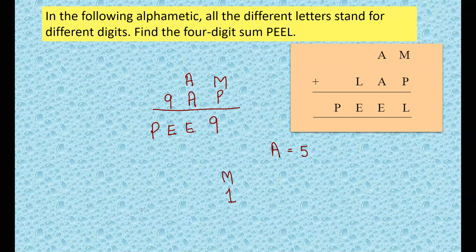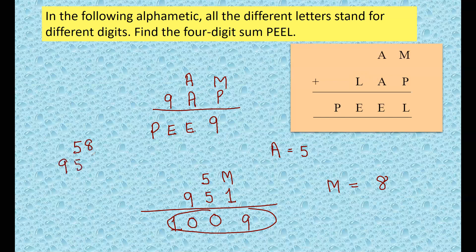And then 9 here, and this is 5 and 5, so this gives 0. Here it becomes 0, 1. So definitely now you can work it out. Then M will be 8, right? So our PEEL is 1009. You can see 58 added to 951 gives you 1009. Little hit and trial method can help you solve this problem.